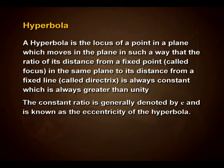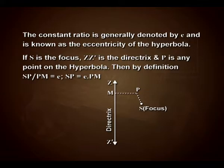The constant ratio is generally denoted by e and is known as the eccentricity of the hyperbola. If S is the focus, ZZ' is the directrix, and P is any point on the hyperbola, then by definition SP/PM = e, or SP = e × PM.